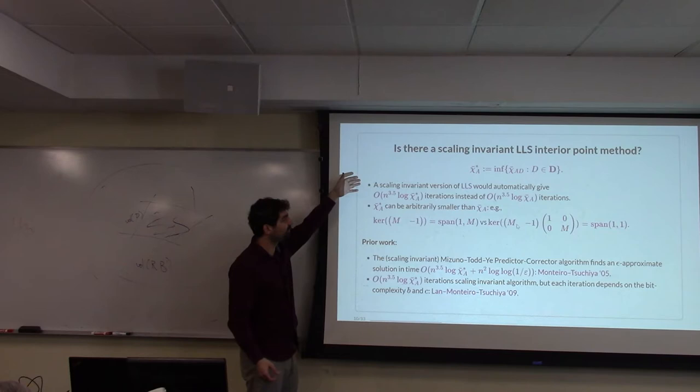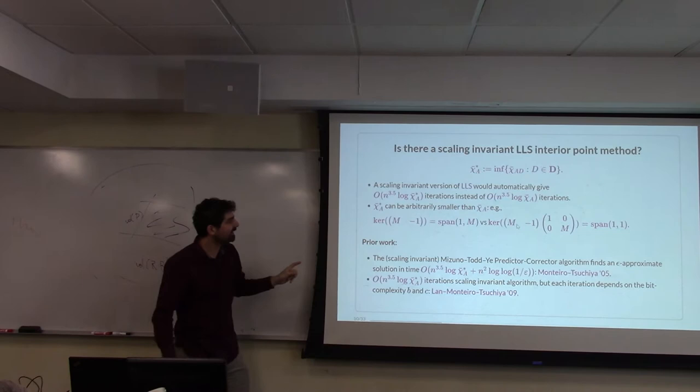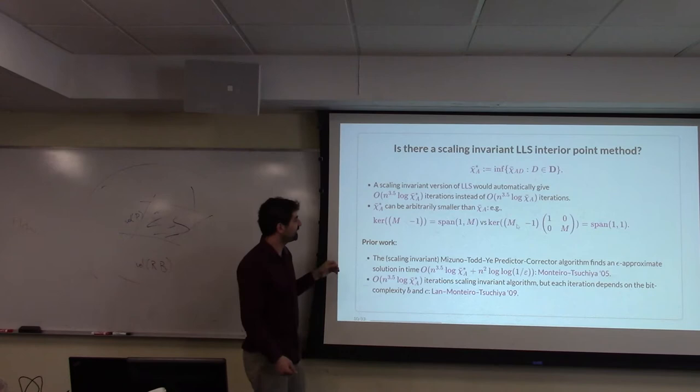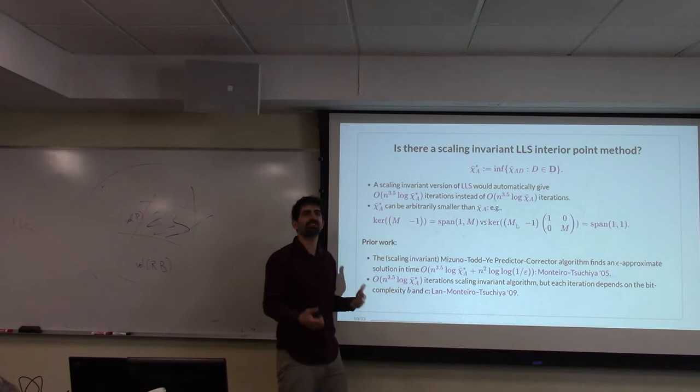In essence, the open problem was to find an interior point method that is invariant under these three scalings, or equivalently one that just depends on chi_bar_star. This was first posed as an open problem by Monteiro and Vavasis, and there was a lot of very nice progress on this problem.